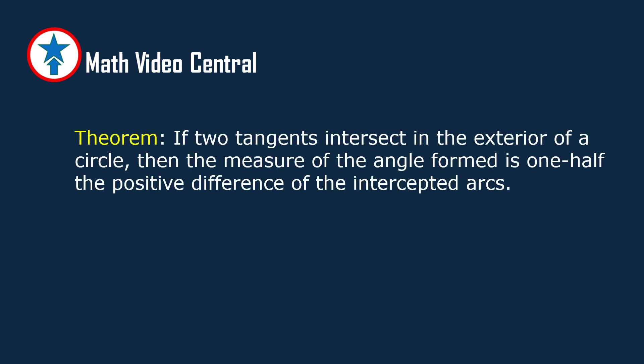Let us prove this theorem. If two tangents intersect in the exterior of a circle, then the measure of the angle formed is one half the positive difference of the intercepted arcs.